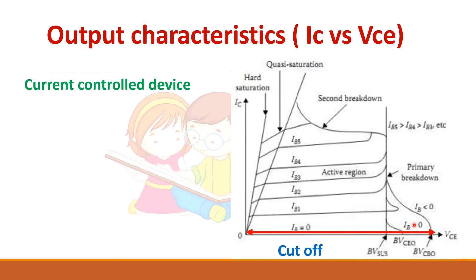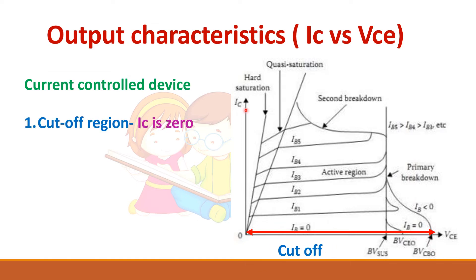When the base current is zero, meaning there is no gate signal, the output current should be zero. This is called the cutoff state or off state. In this condition, the device can block a particular maximum voltage. Sometimes the base current can be maintained negative to increase this blocking voltage. This is the cutoff region where the collector current is zero.